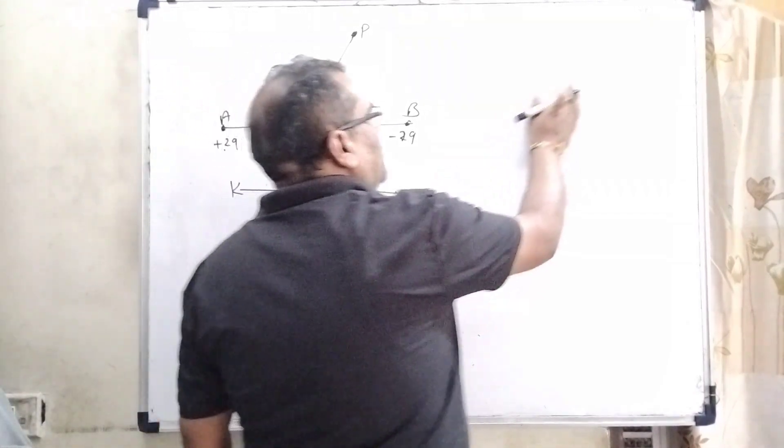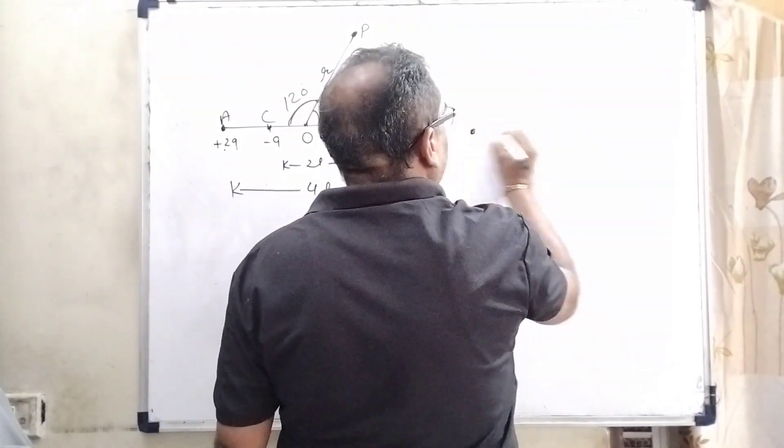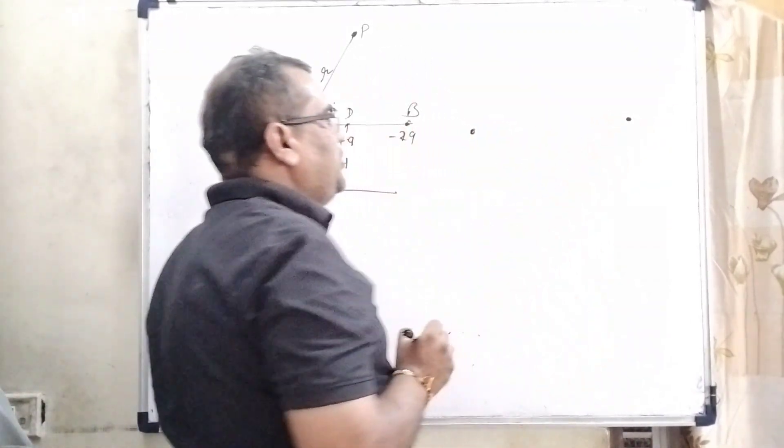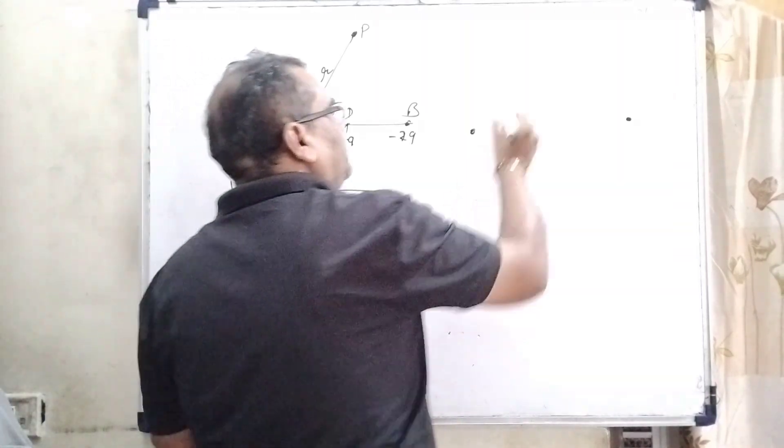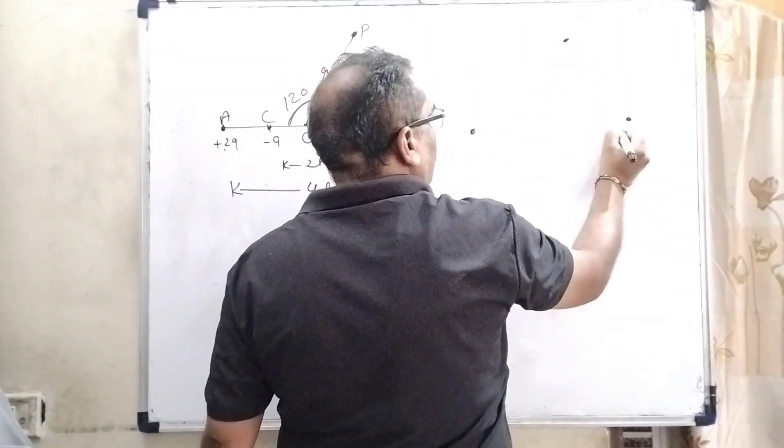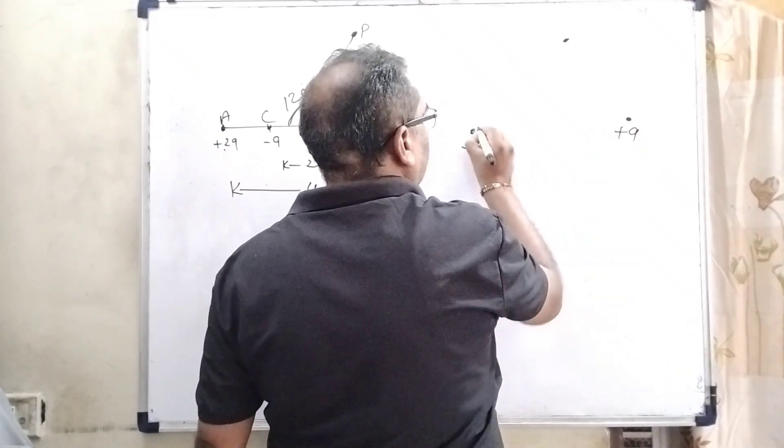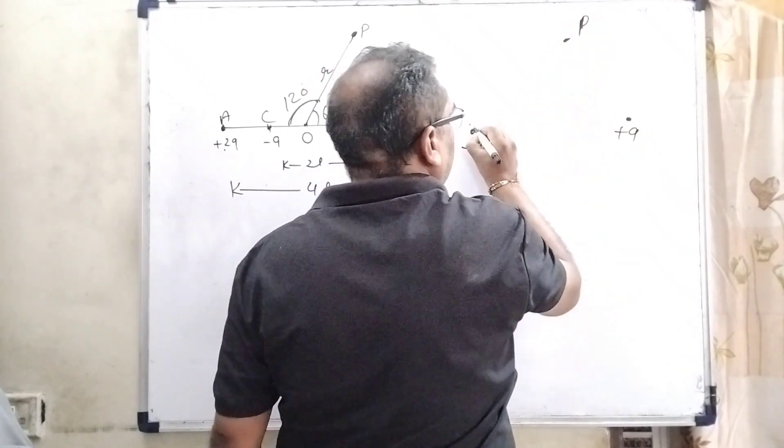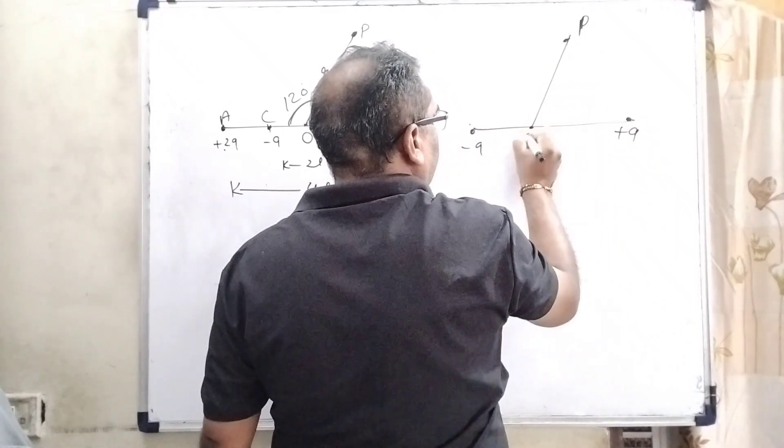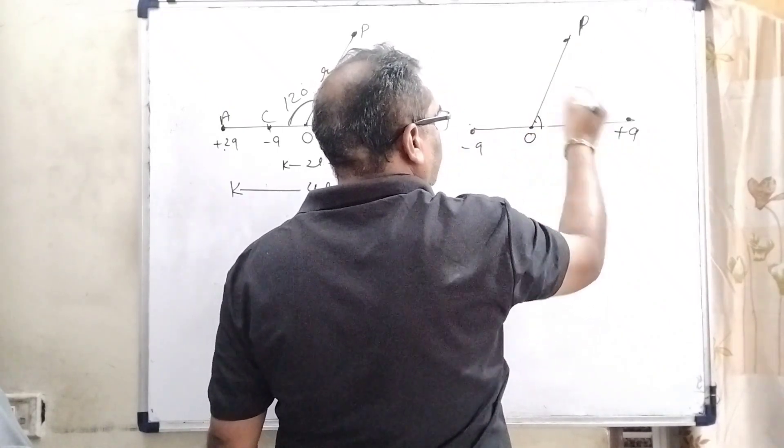To solve this question, we are using the concept of potential at any general point due to a dipole. Suppose this is a dipole plus Q minus Q, and at this point P we have to calculate the potential. And this is making angle theta with the center from the positive charge.